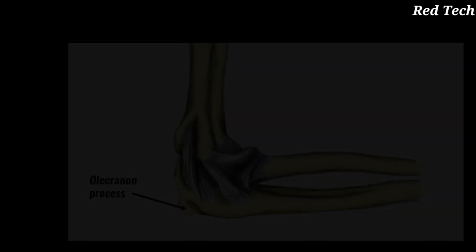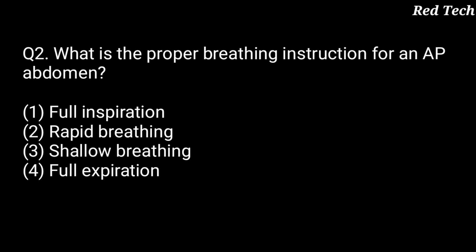Question number 2: what is the proper breathing instruction for an AP abdomen? When we do AP abdomen, what instruction do we give the patient? Option 1 is full inspiration, option 2 is rapid breathing, option 3 is shallow breathing, option 4 is full expiration. The right answer is option 4, full expiration — we first ask the patient to breathe in, then breathe out, and then we perform the radiograph or take the X-ray.